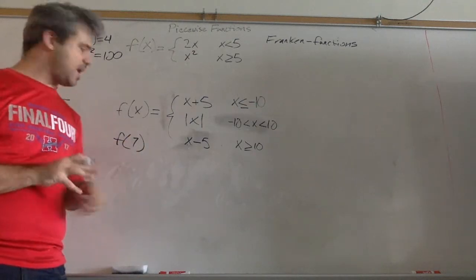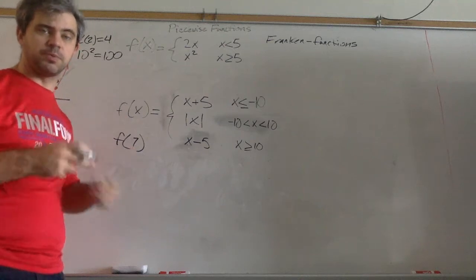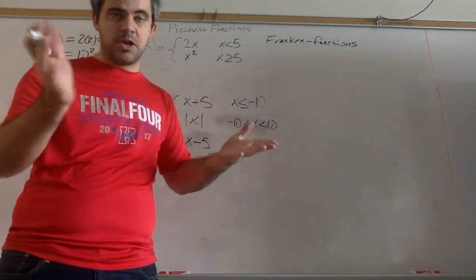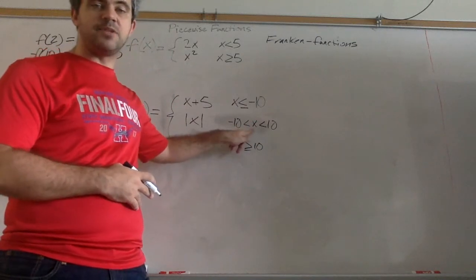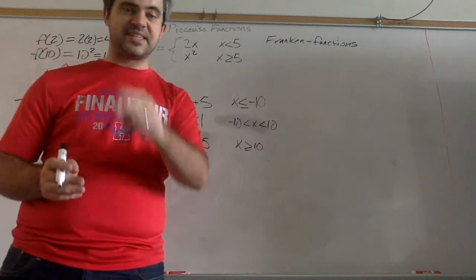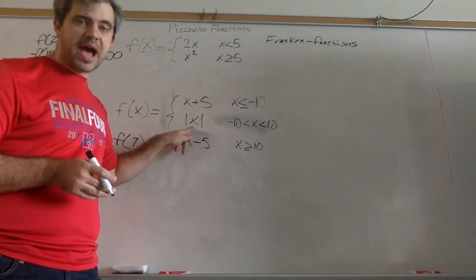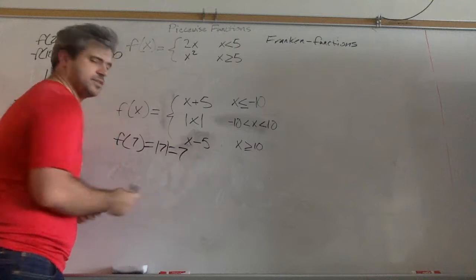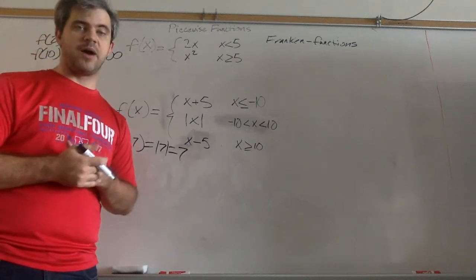If x is 7, is 7 less than negative 10? No, it's not. Is 7 between negative 10 and 10? Yes, it is. So we're going to use absolute value of x. So absolute value of 7 is 7. That would be our output here.